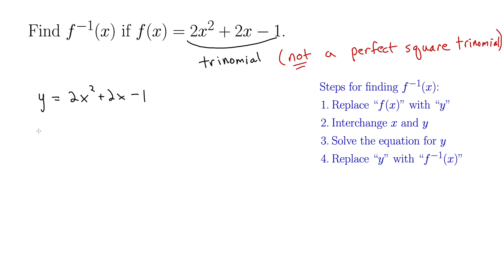Interchange x and y. So we have x equals 2y squared plus 2y minus 1. So far so good.